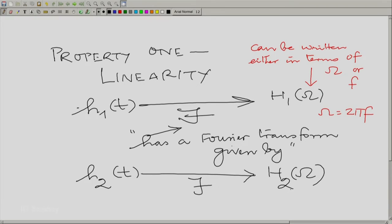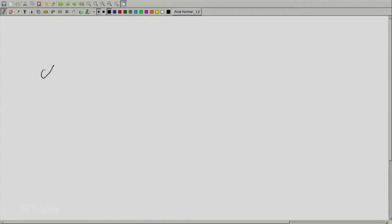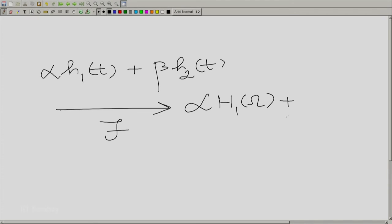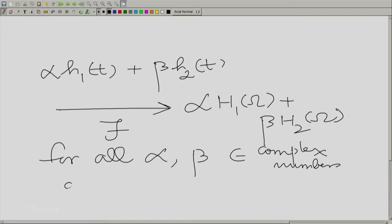Then, linearity says α times H1(t) plus β times H2(t) has the Fourier transform α times H1(ω) plus β times H2(ω). Remember, we must allow for all α, β belonging to the set of complex numbers and all applicable H1 and H2.